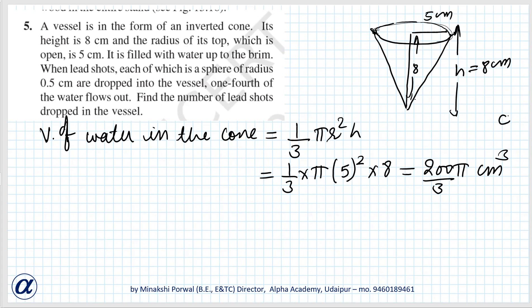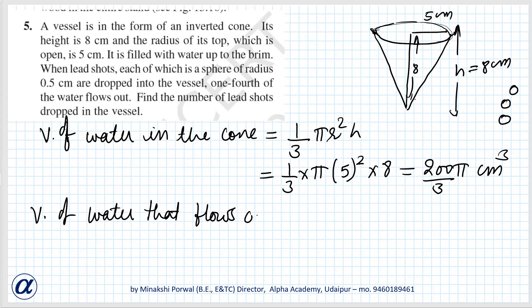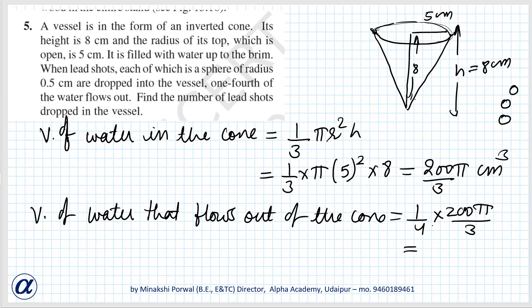Because of the lead shots dropped in, water comes out — one-fourth of the water. So the volume of water that flows out of the cone equals one-fourth into 200π/3, which equals 50π/3 cubic centimeters.